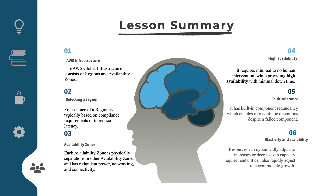To summarize what we learned in this lesson: AWS infrastructure is divided into regions and availability zones. Your choice of region is typically based on compliance requirements or to reduce latency. Each availability zone is physically separate from other availability zones and has redundant power, networking, and connectivity.